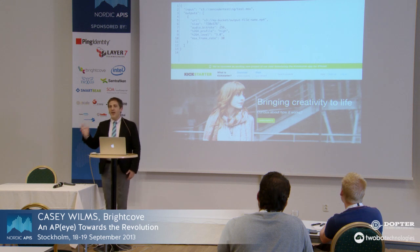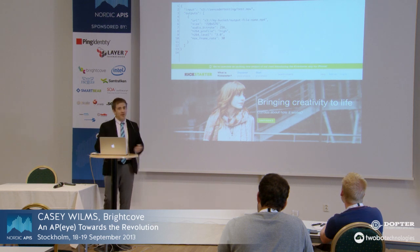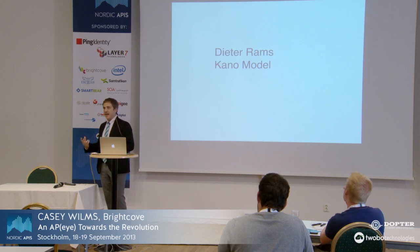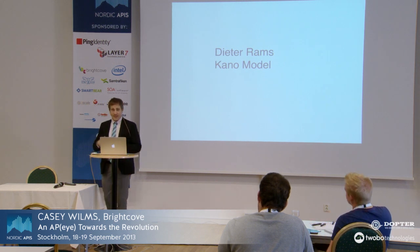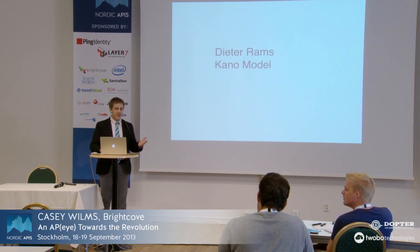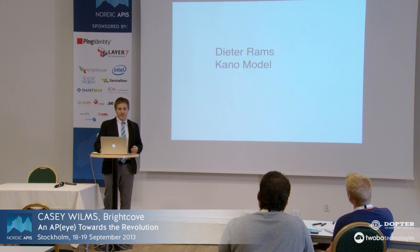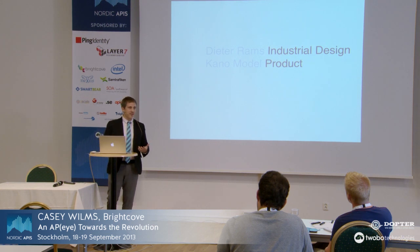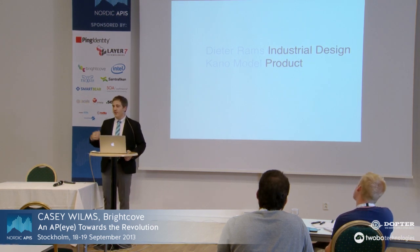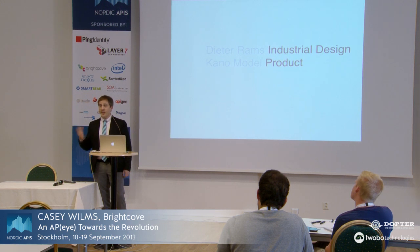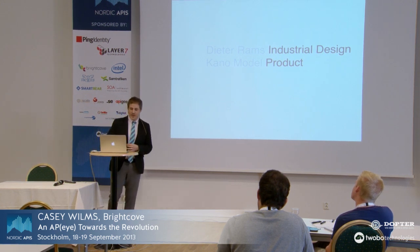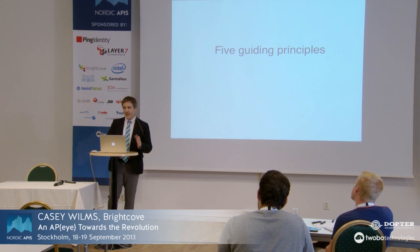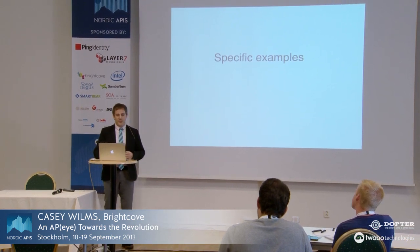The end goal is to create a language that's just as interactive and just as much of an interface as any great website or product. A couple of things that informed our decision-making process as we developed our API were Dieter Rams and the Kano model. Dieter Rams informs industrial design and reflects how we make design decisions with the API. The Kano model is a way of looking at a product and making decisions about what you want to support within your product. That led us to five guiding principles.